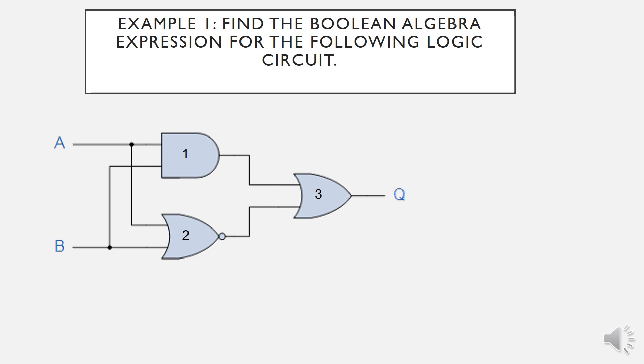Let's have a look at this example of how to find the Boolean algebra expression for this logic circuit. The logic circuit has two inputs and one output with three different gates. In order to find Boolean expression for this circuit, we start from the input side on the left, then we follow the input signal lines to each of the logic gates until we reach the output.